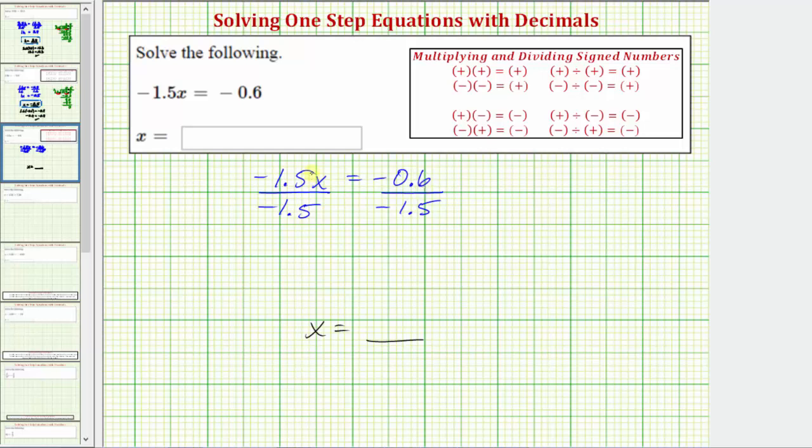Now looking at the left side of the equation, negative 1.5 divided by negative 1.5 is equal to 1, so the left side simplifies to just 1x, but 1x is x.